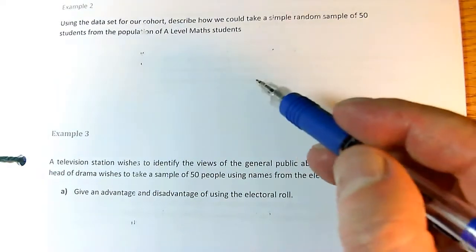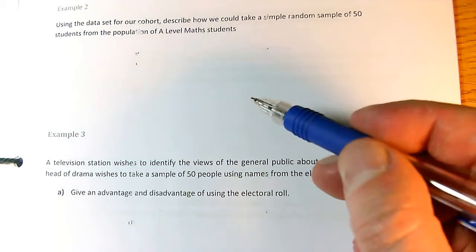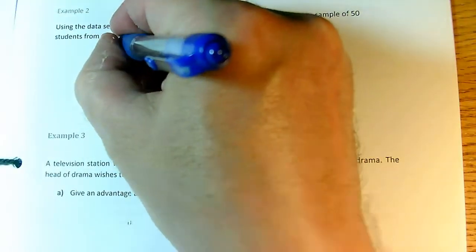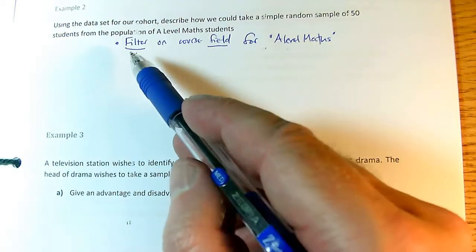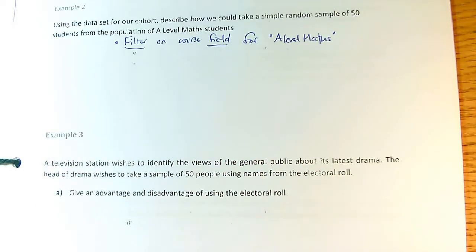And the data set may well have other kinds of students in. For example, it may include everyone doing A-level statistics, even if they're not also doing A-level maths. So the first thing we're going to need to do is run a filter. So we use the database terminology, we filter on the course field, making sure we've got all the A-level math students and no one else.